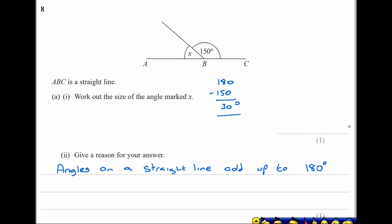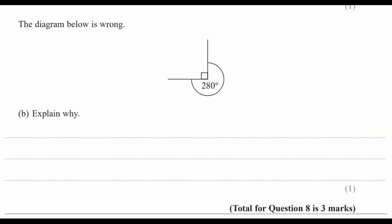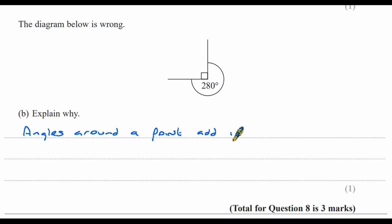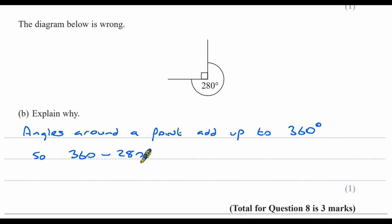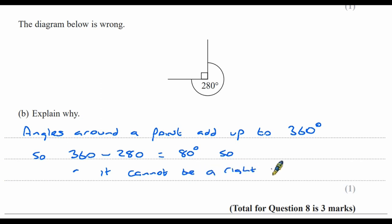Moving on to part B: we're already told the diagram is wrong and need to explain why. Angles around a point add up to 360 degrees. 360 minus 280 equals 80 degrees, so the remaining angle cannot be a right angle.